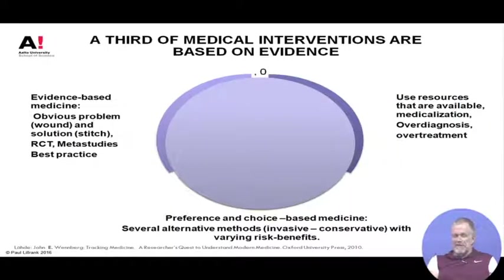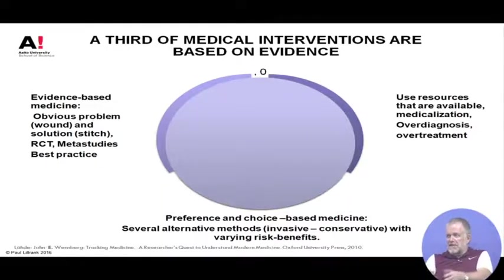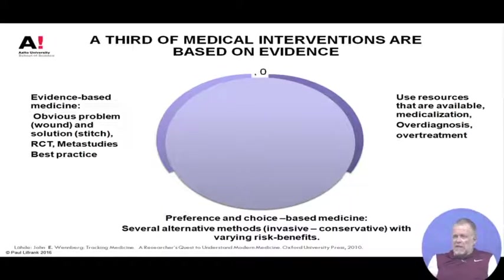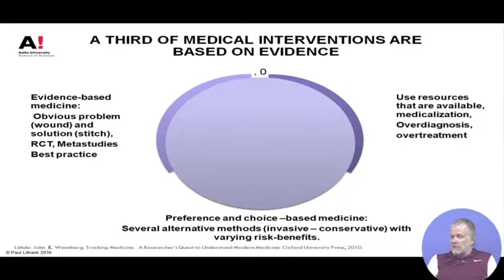All of a sudden, demand changes — everybody and his dog starts to want an MRI, and the kind of diseases that people have change because the MRI camera discovers subclinical things that nobody knew about or cared about before. So supply creates its own demand. That happens in any business — in the same way as cheap flights from here to Goa make people start to want them.